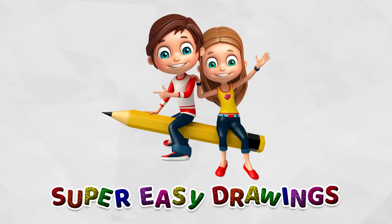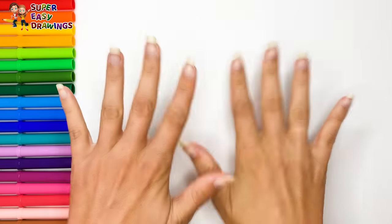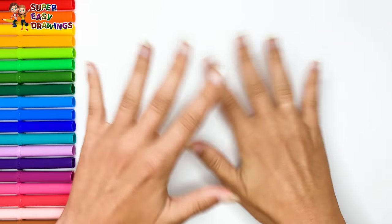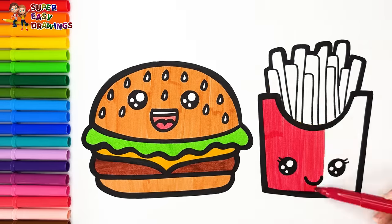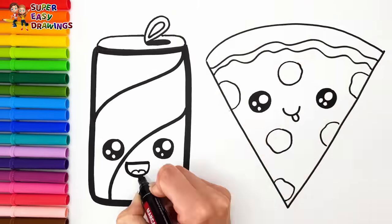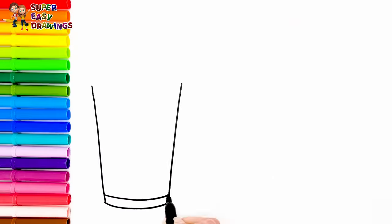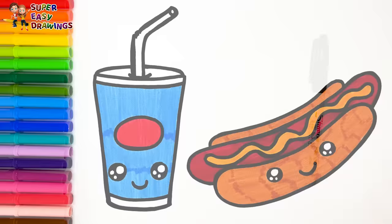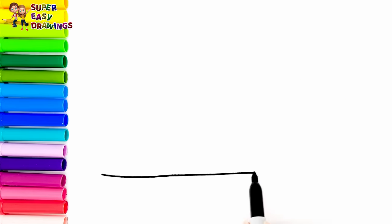Super Easy Drawings. Hello everyone and welcome to the Super Easy Drawings channel. Today we are going to draw fast foods. Let's draw and color a hamburger with some fries. Let's start drawing.